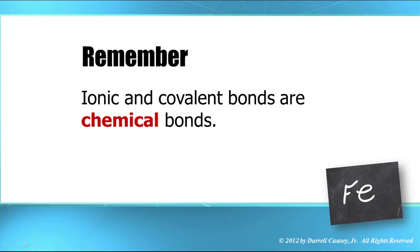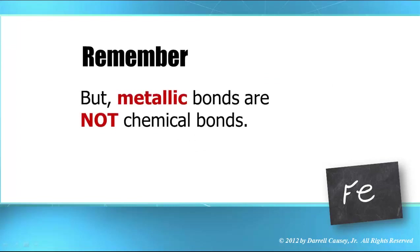So remember, ionic and covalent bonds are chemical bonds, but metallic bonds are not chemical bonds. But they're still an attraction. Therefore, they are somewhat of a type of bond. We call them metallic bonds.